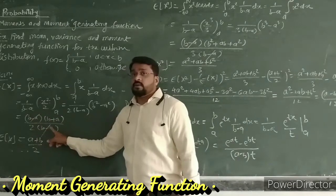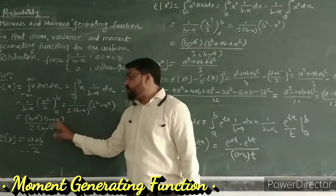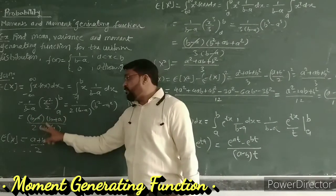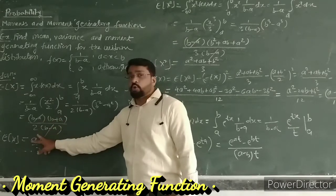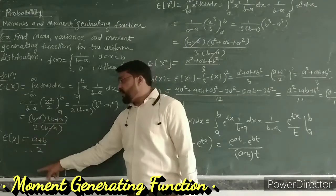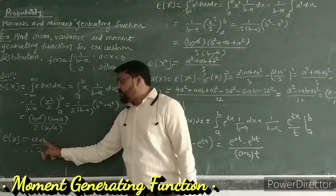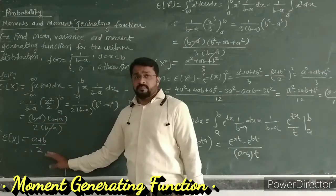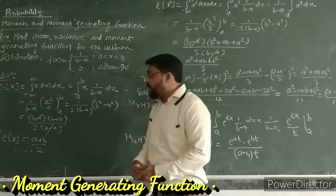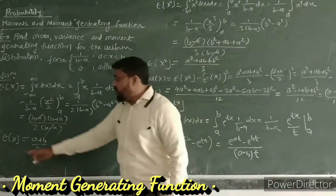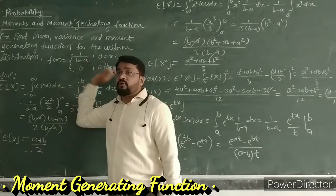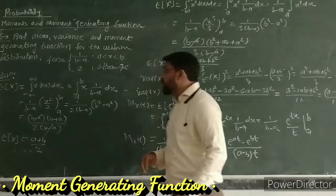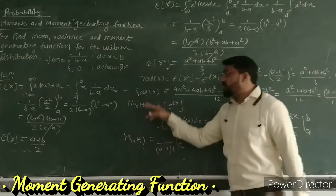Then b² minus a² is factored as (b - a)(b + a), so the (b - a) cancels with the 1/(b-a) from the distribution, leaving (b + a)/2, which is (a + b)/2. This is the mean value of the random variable x for the uniform distribution.